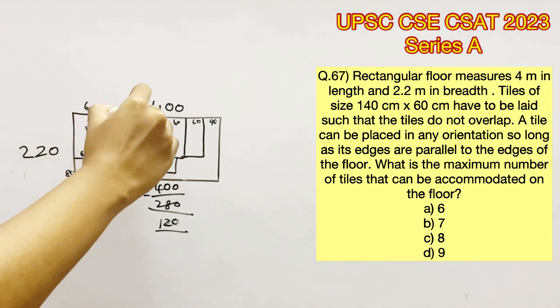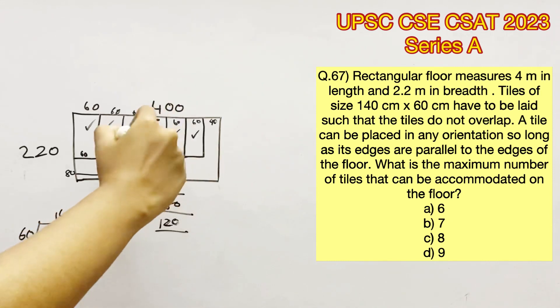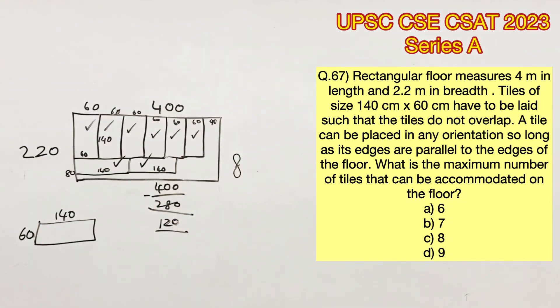So one more tile is not possible. In total, we have 8 tiles. Therefore, 8 is the maximum number of tiles that can be accommodated on this floor. So option C is the right answer.